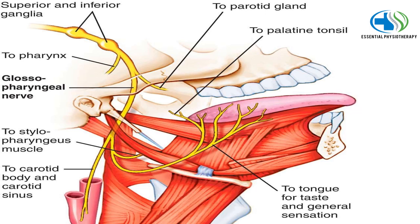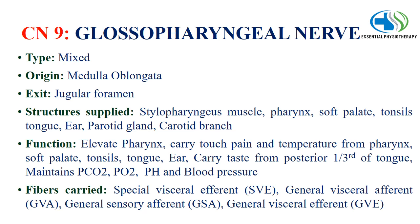The 9th cranial nerve is the glossopharyngeal nerve. It is a mixed type nerve with its origin from the medulla oblongata, exiting through the jugular foramen. Structures supplied include the stylopharyngeus muscle, pharynx, soft palate, tonsils, tongue, ear, parotid gland and carotid branch. Its function is to elevate the pharynx, carry touch, pain and temperature from the pharynx, soft palate, tonsils, tongue and ear, carry taste from the posterior one-third of the tongue, and maintain partial pressure of carbon dioxide, oxygen, pH and blood pressure. Fibers carried are special visceral efferent, general visceral afferent, general somatic afferent and general visceral efferent fibers.